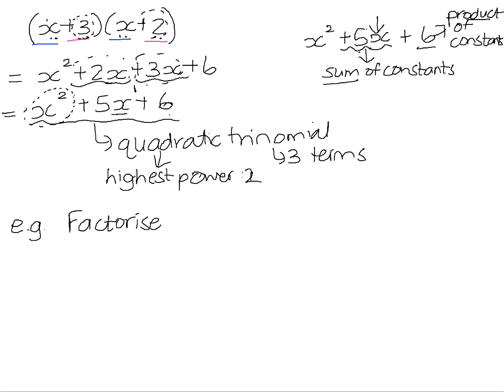So if we want to work backwards — if we've got the trinomial and we want to find what brackets gave us that trinomial — for example, a squared plus 5a plus 4. We know that to get a squared as our first term, we must have multiplied a by a, so we can immediately identify the first terms in our brackets. Now we look at the last term. The last term comes from the product of the two constants in the brackets, but with a composite number like 4, there's often more than one combination of factors we could pick.